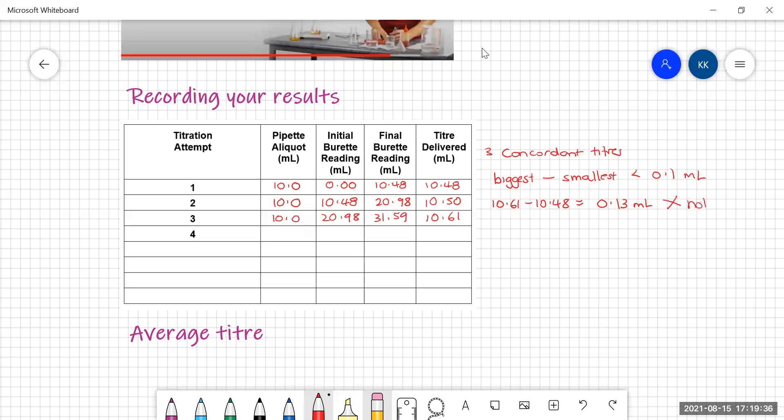So I have to try again. So again, I've got 10.0. This time I'm starting at 31.59 and I do my titration and my final volume is 42.18. That means my titer is 10.59.